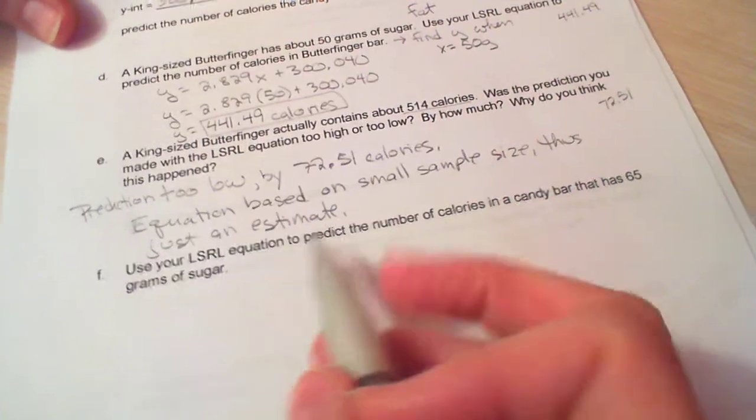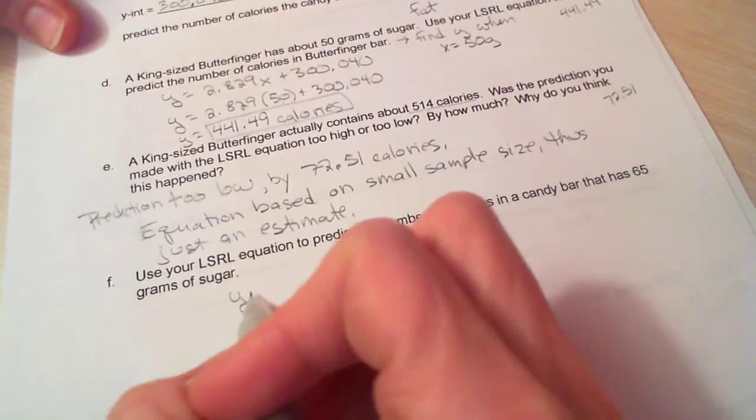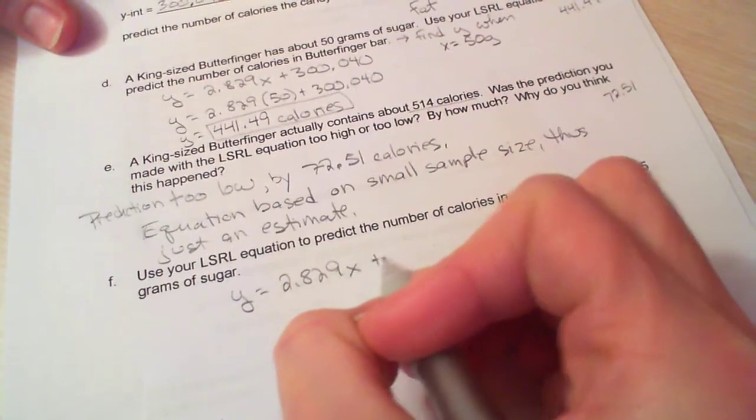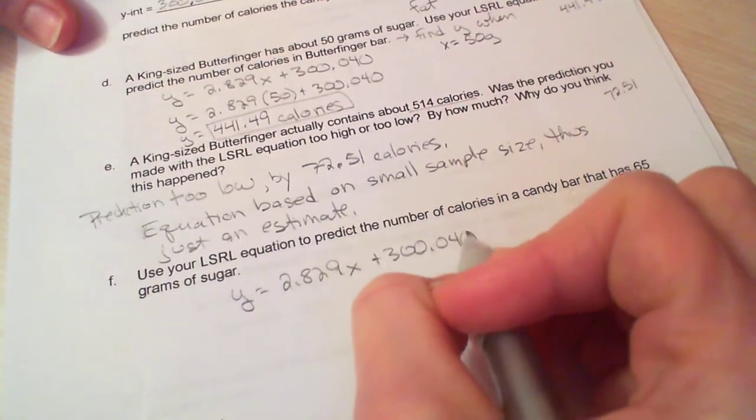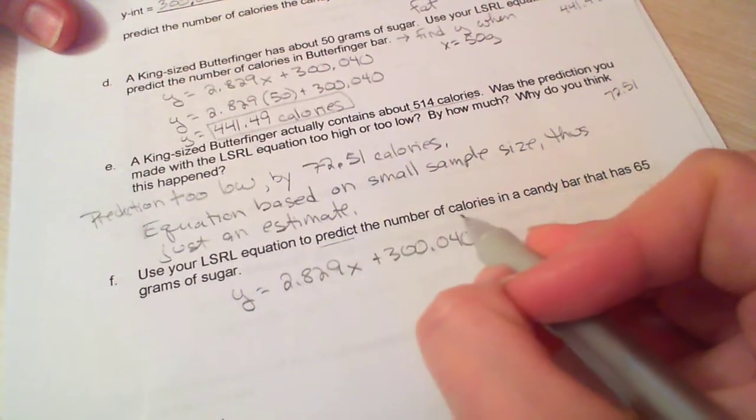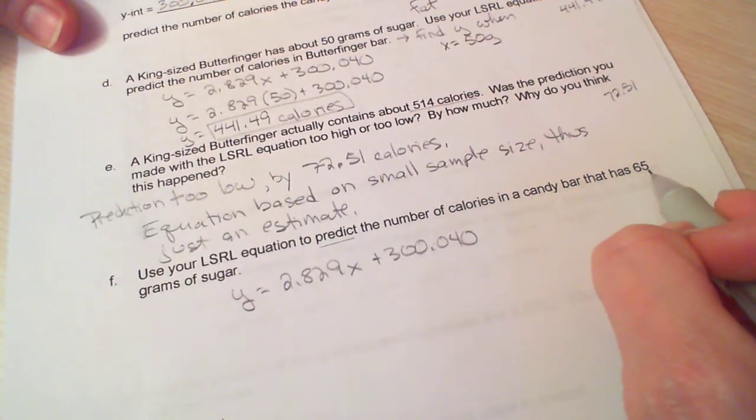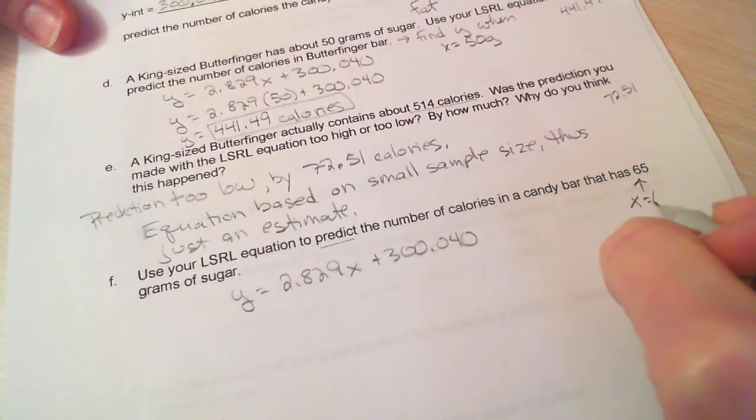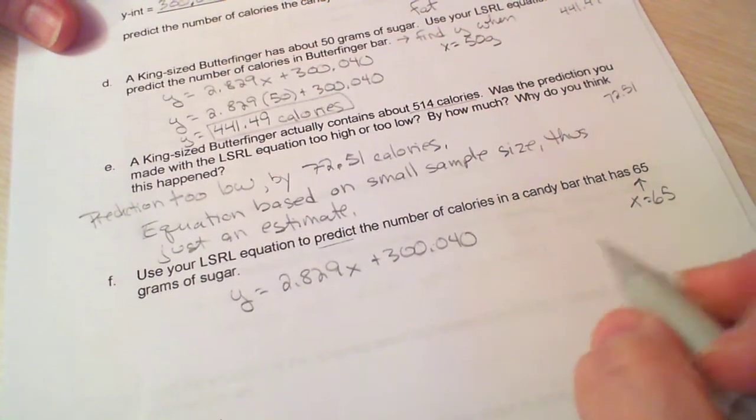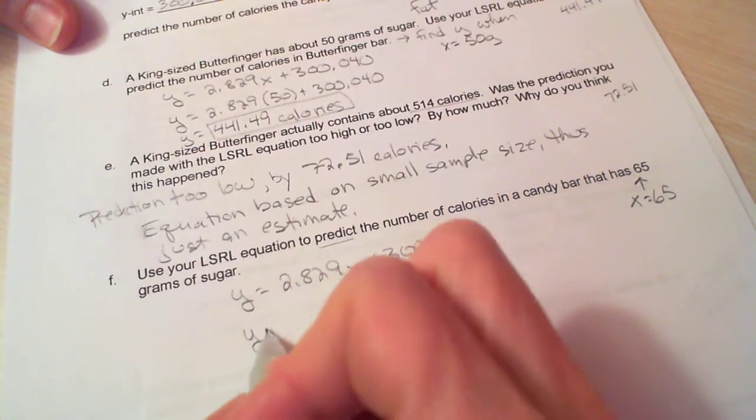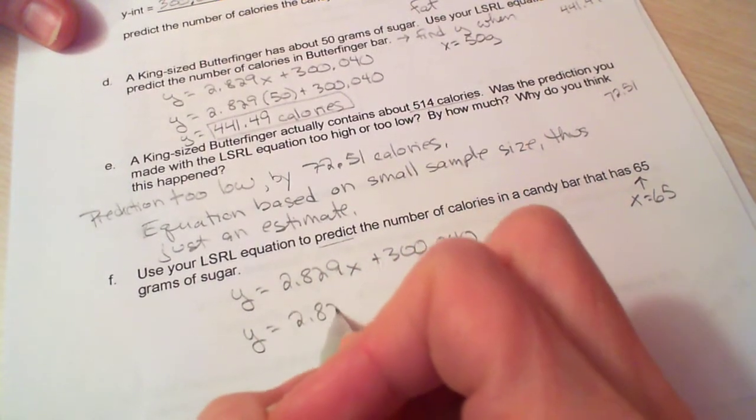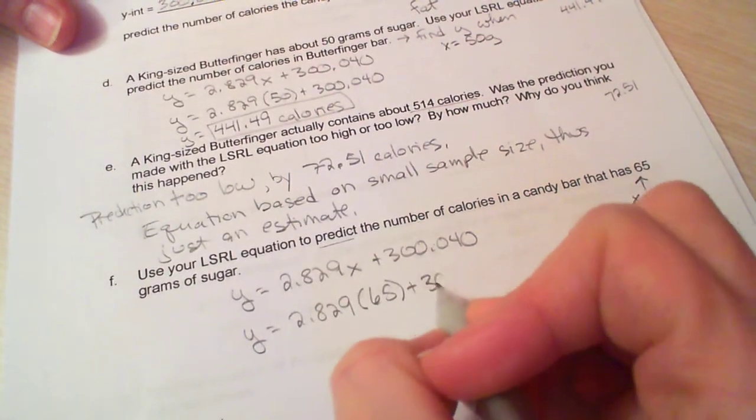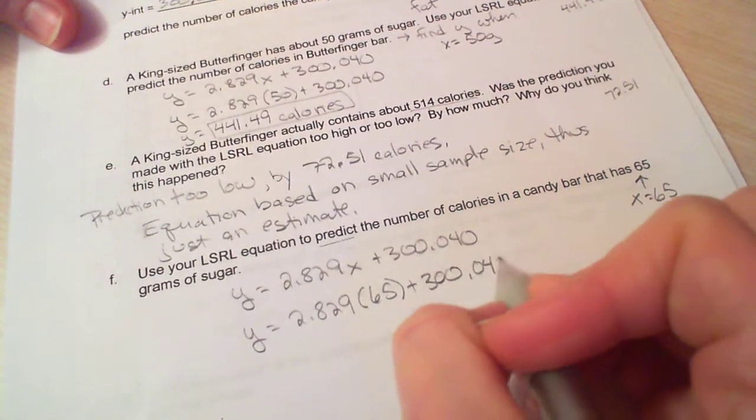So now it says use your least squares regression equation - remember that's this, every single time - to predict the number of calories in a candy bar that has 65 grams of sugar. So remember this is x. Grams of sugar is always x or our input. So we're substituting in place of x in our equation 65, and we're solving for y.